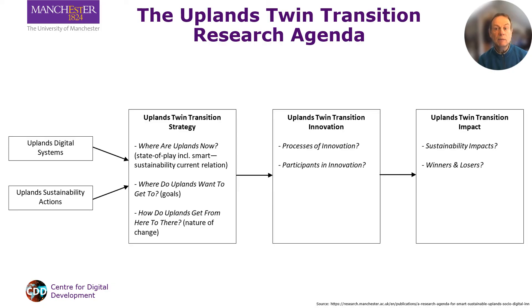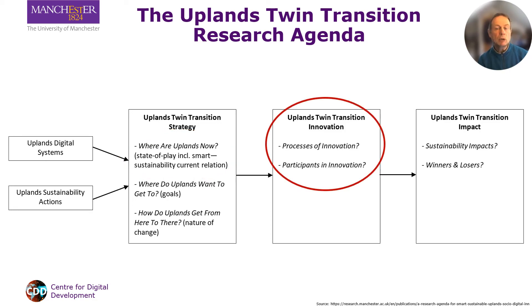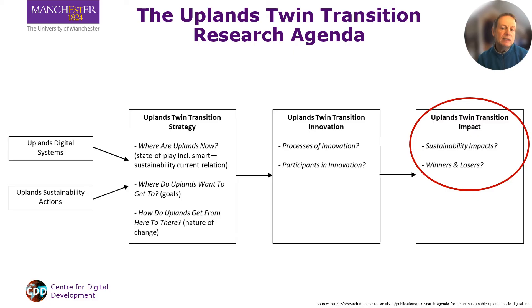As summarised in this diagram, the research agenda for uplands twin transition proposes a multifaceted approach. This includes research to map existing digital and sustainable practices in uplands to create a baseline understanding; studies focusing on processes of innovation, identifying who's involved and how to ensure inclusive development; and evaluating the effects of these transformations on sustainability and social equity in order to identify areas of improvement and direct future efforts towards truly beneficial change.